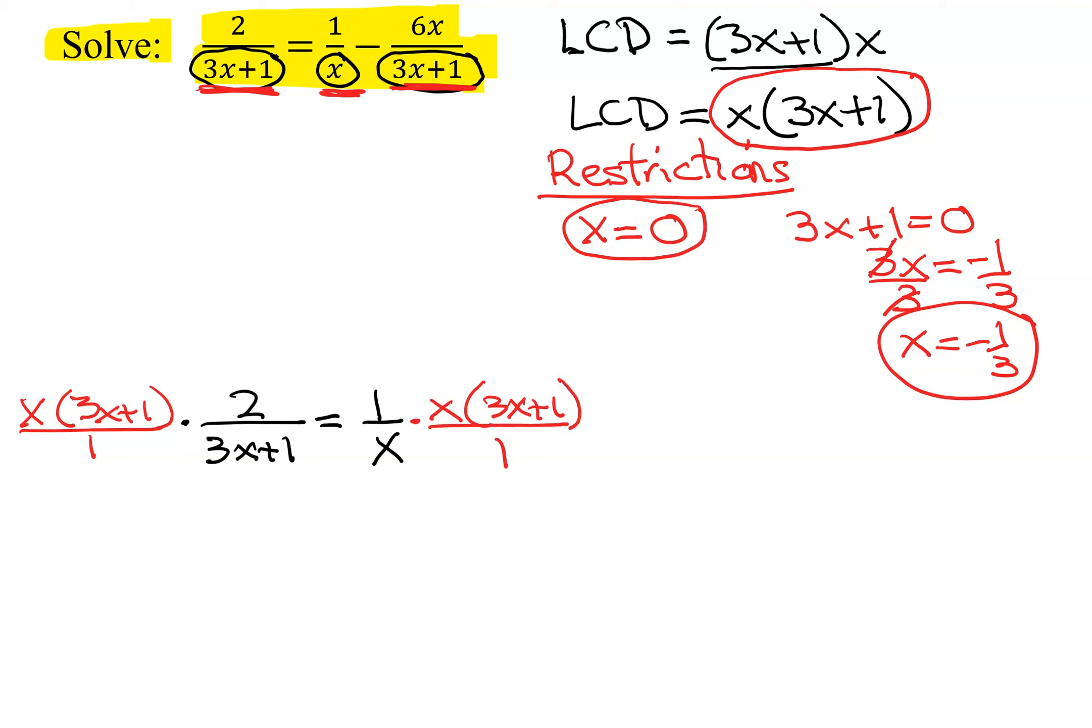And finally, minus 6x over 3x plus 1. And don't forget that term also has to be multiplied by the LCD. So now I've multiplied each term by my LCD, and now we can reduce stuff out of each term and see what we have left.